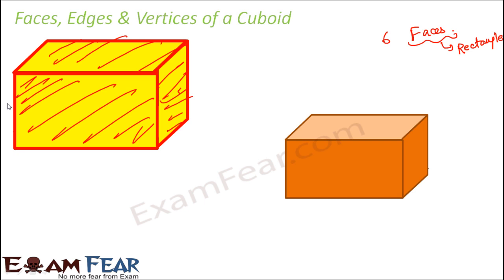Any two faces meet at a line segment, and that line segment is an edge. For example, face one and face two have one side in common — that side is an edge. Face one and face three have this side in common — that is an edge. Face two and face three have this side in common — that is also an edge. Each such line segment is termed as an edge; edges are the common line segments between two faces.